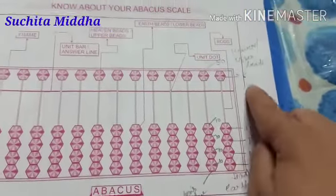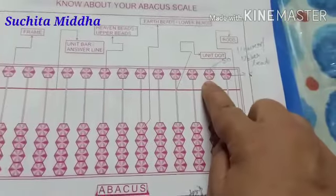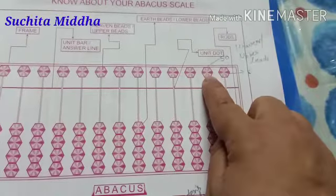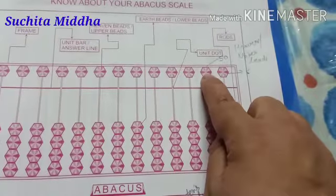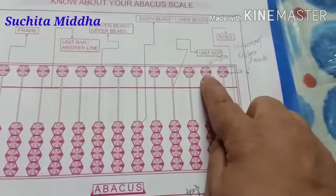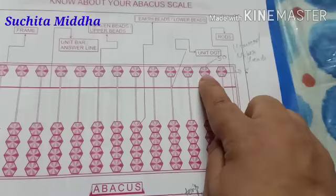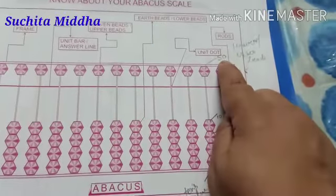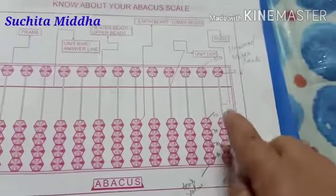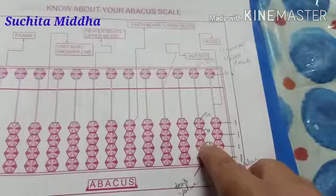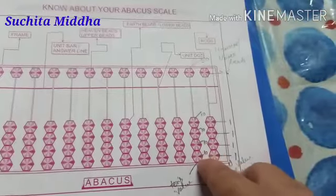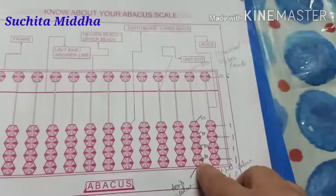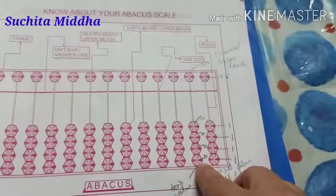Now let's go to the second row. The upper bead at the tens place represents the value 50, and each bead in the lower part of the second row represents the value 10.